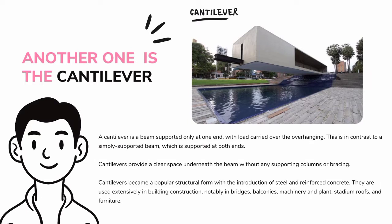Another principle is the cantilever. A cantilever is a beam supported only at one end, with the load carried over the overhang. This is in contrast to a simply supported beam, which is supported at both ends. Cantilevers provide a clear space underneath the beam without any supporting columns or bracing. They became a popular structural form with the introduction of steel and reinforced concrete, and are used extensively in bridges, balconies, machinery, stadium roofs, and furniture.